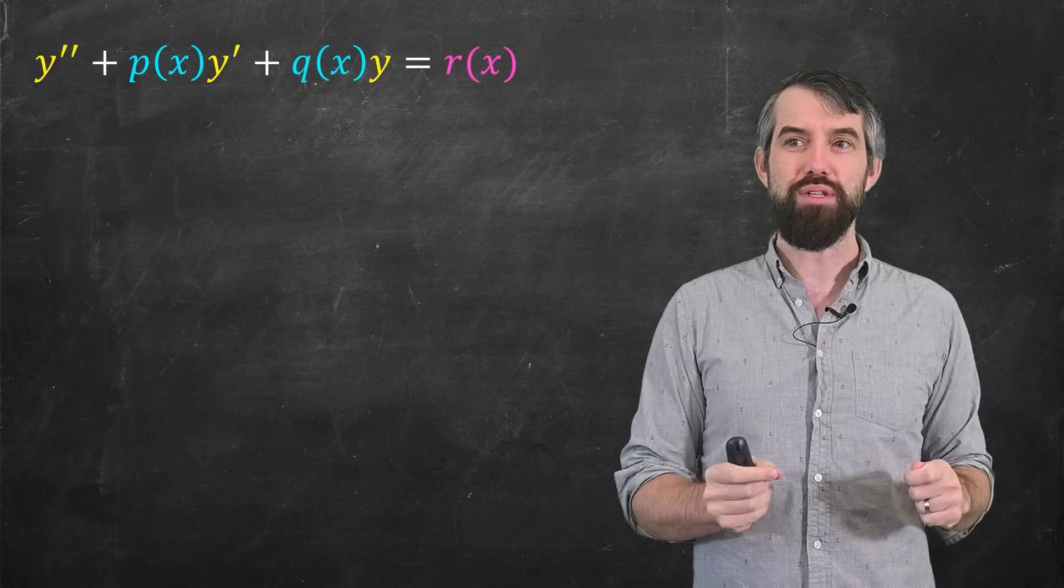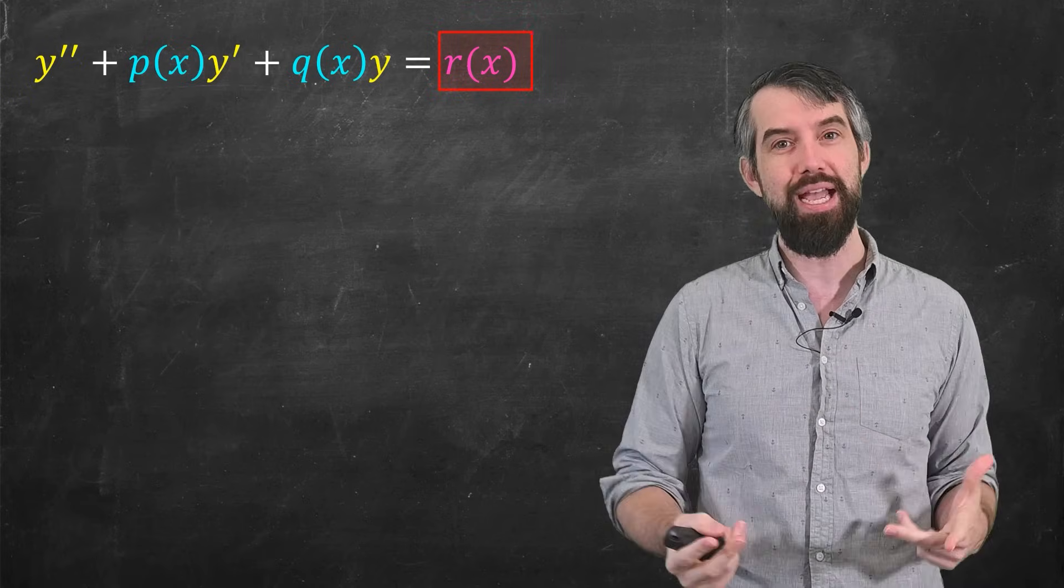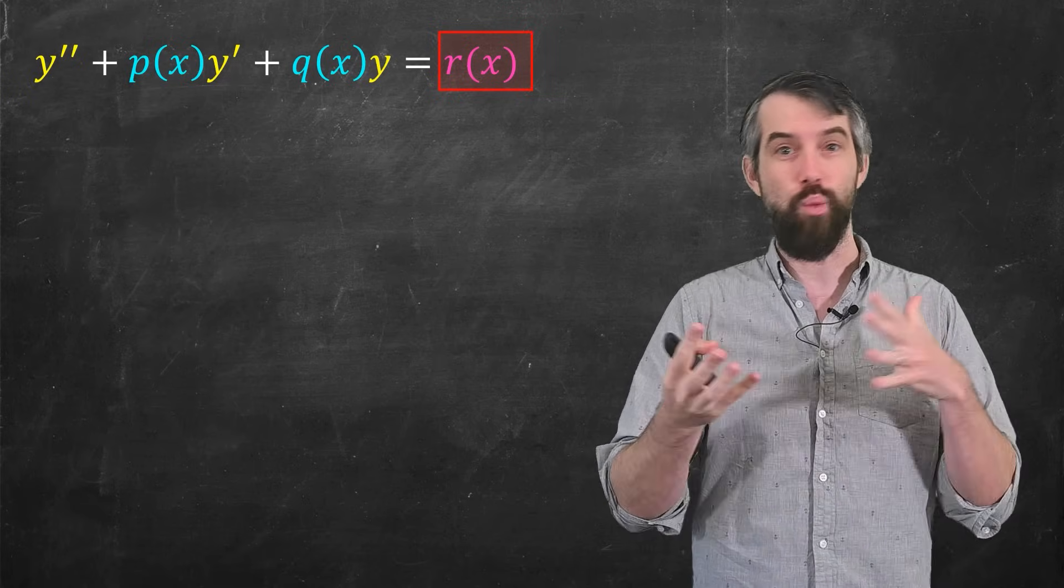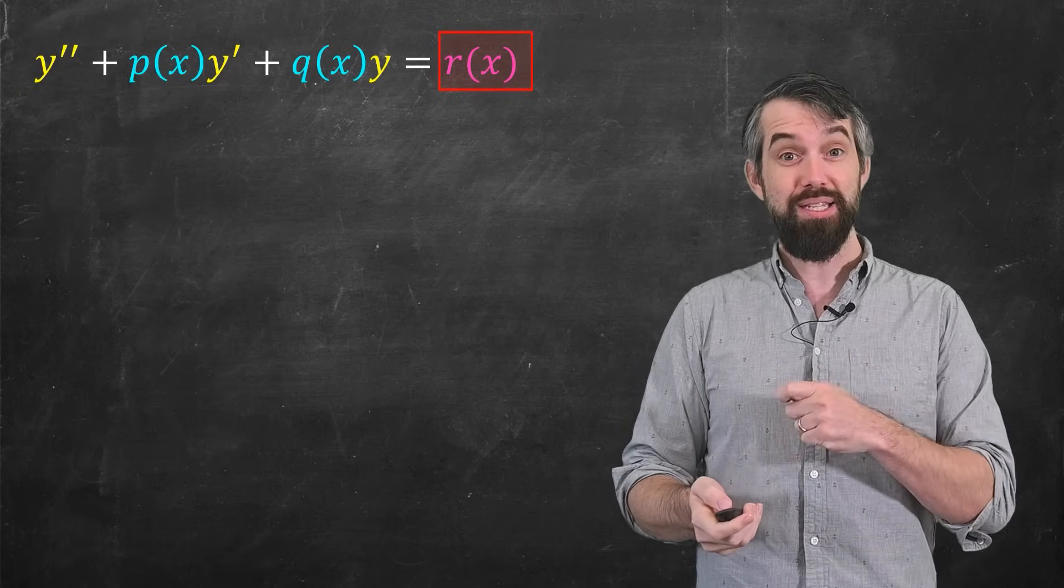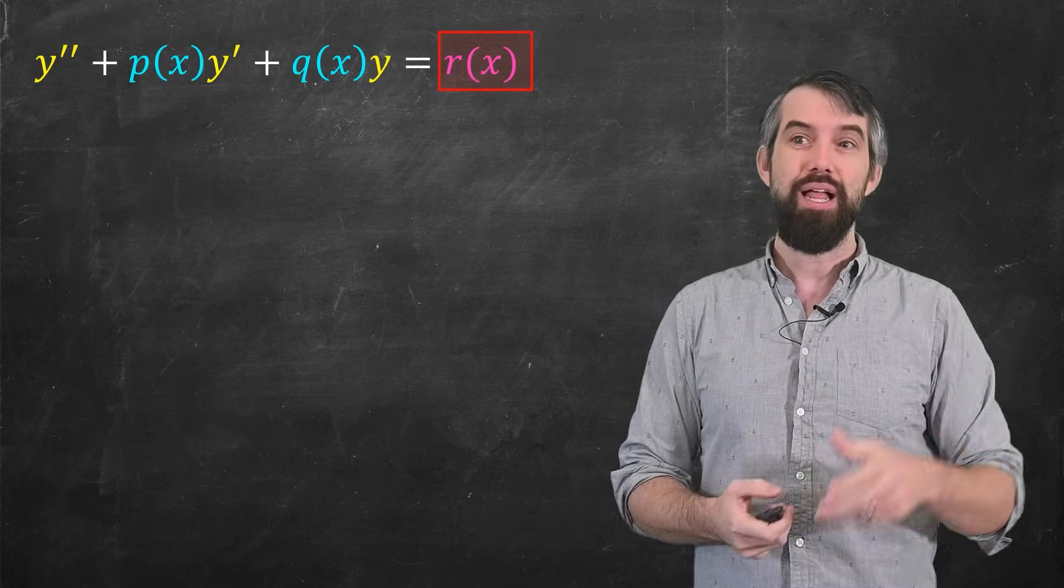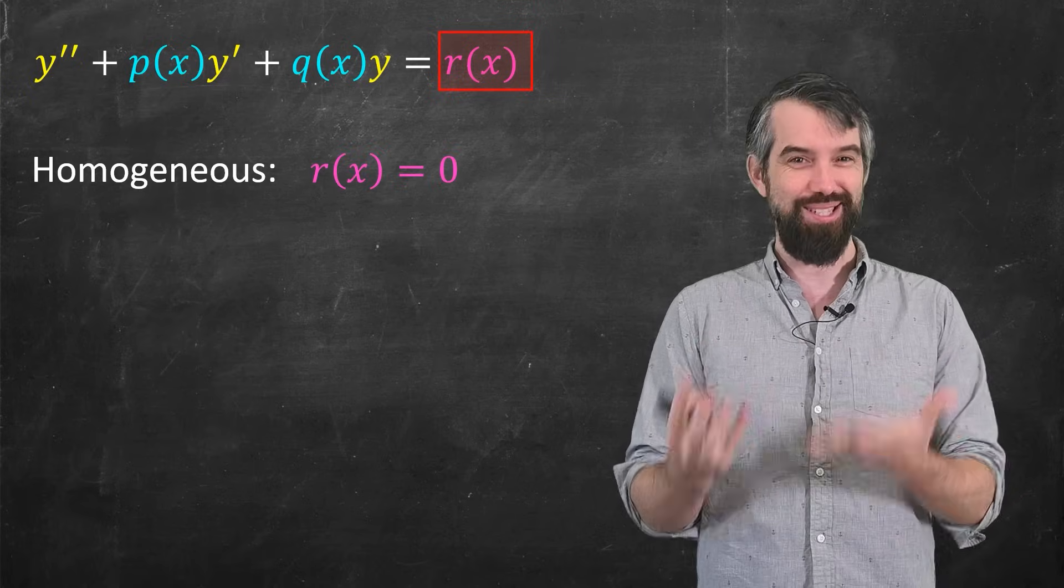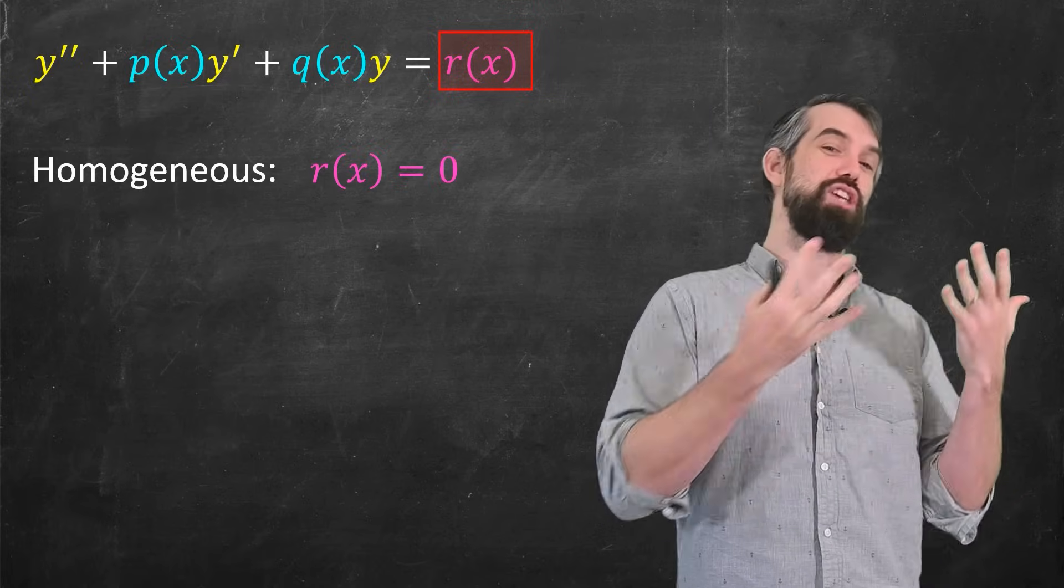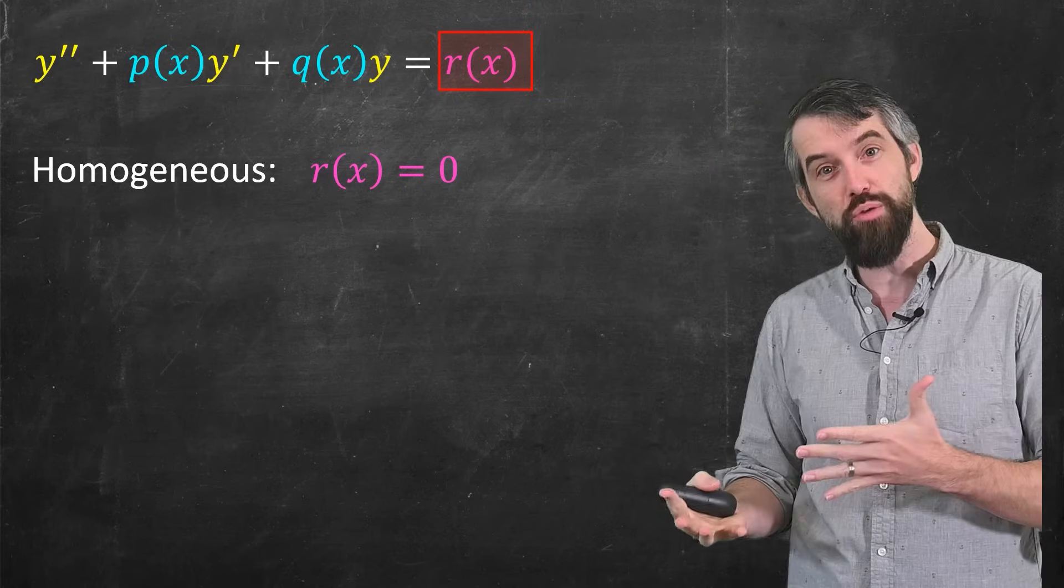And then the third thing I focus in on is what I sometimes call the inhomogeneity. This is the term with no y or y prime in it, but this can make a big difference. So for example, in the special case where it's zero, you have homogeneous equations, in general homogeneous equations are easier than non-homogeneous equations.